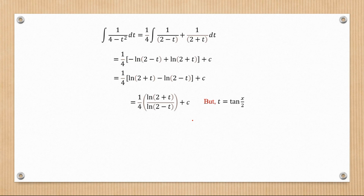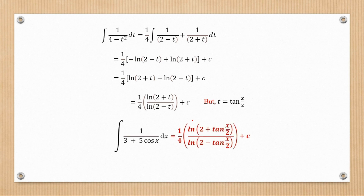Remembering that t = tan(x/2), we substitute back to express the answer in terms of x. Therefore, the integral of 1/(3 + 5cos x) dx equals (1/4) ln|(2 + tan(x/2))/(2 - tan(x/2))| + C. That's our final answer.